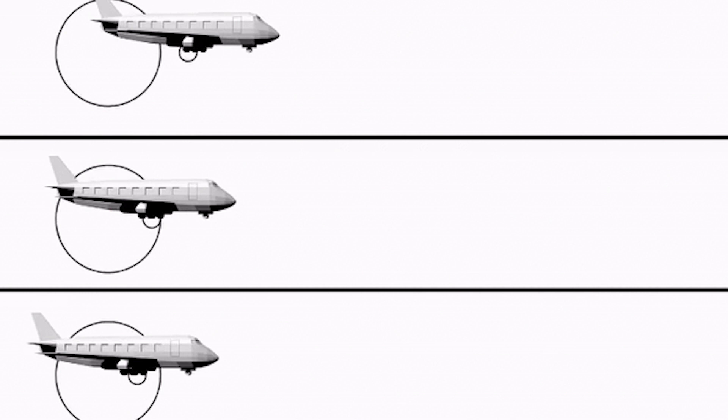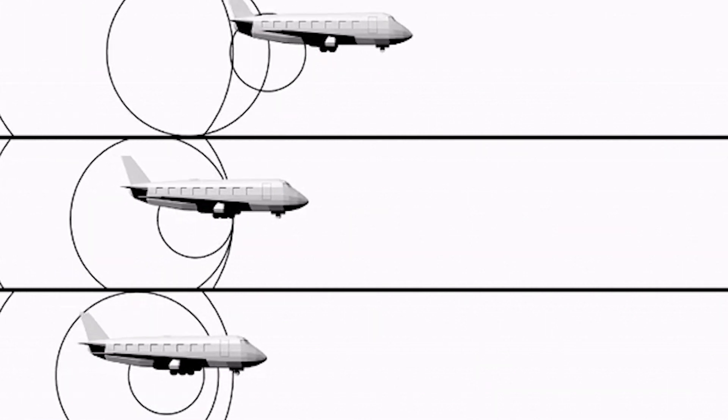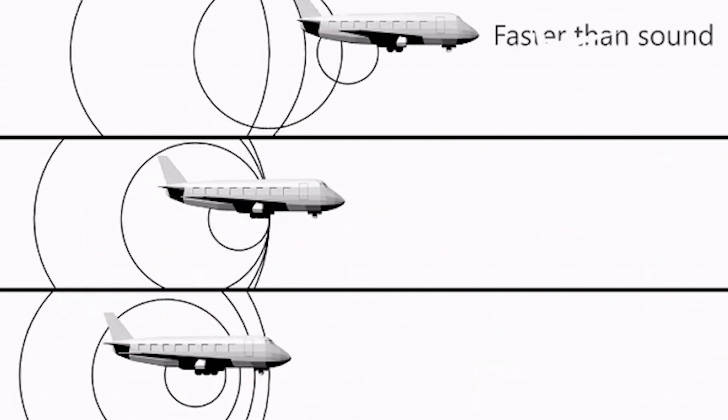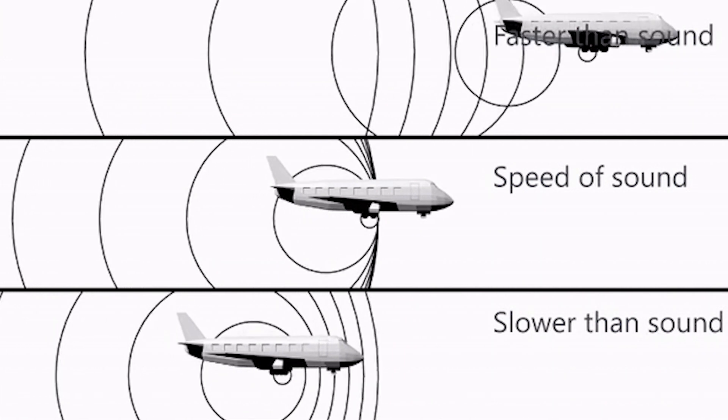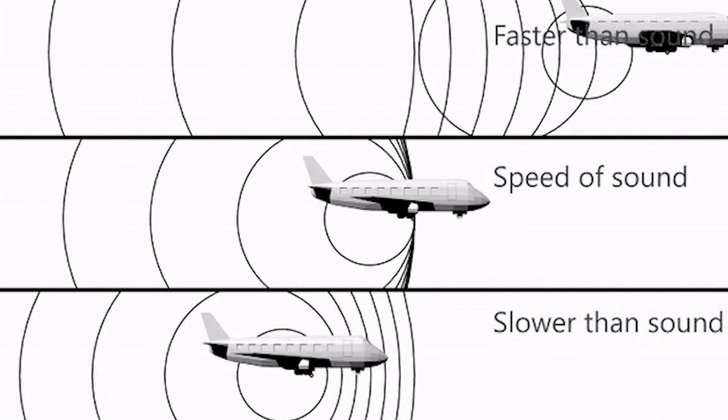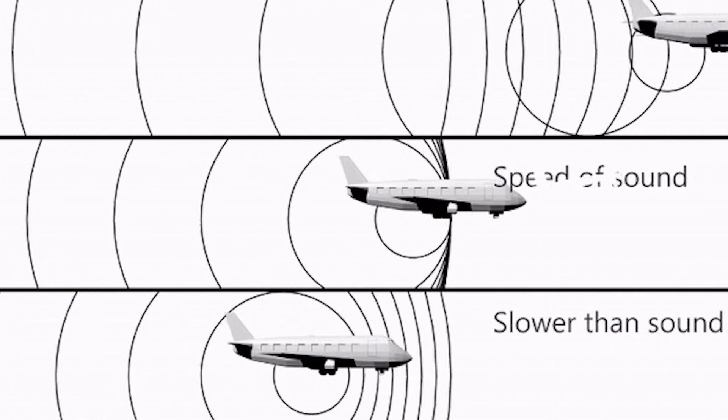When a body is in motion — consider an aircraft — it generates sound waves, also known as pressure waves, which move in all directions. In subsonic speeds, where the velocity of the body is less than the velocity of sound, the wave fronts generated by the body flow distinctly at the speed of sound.